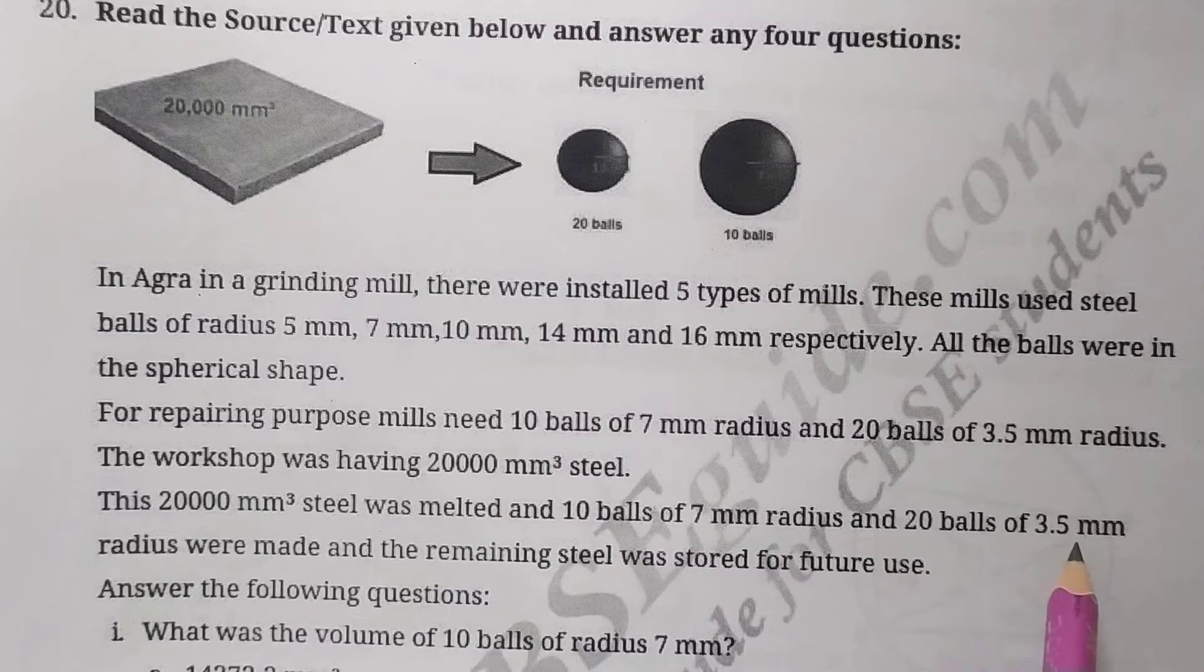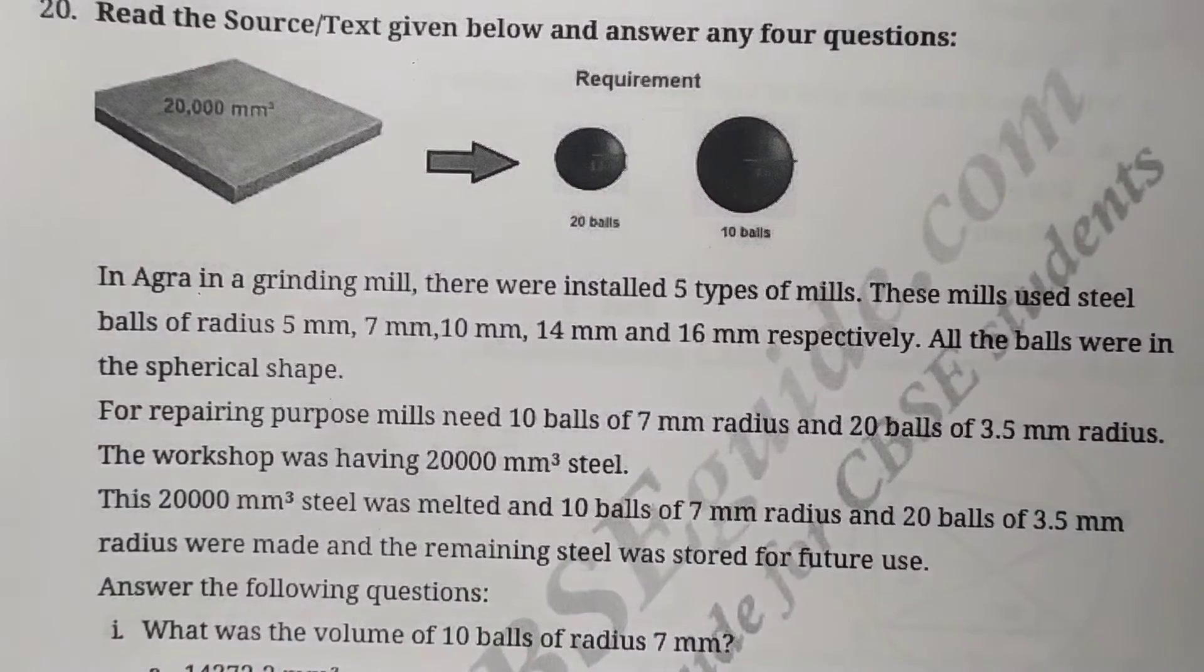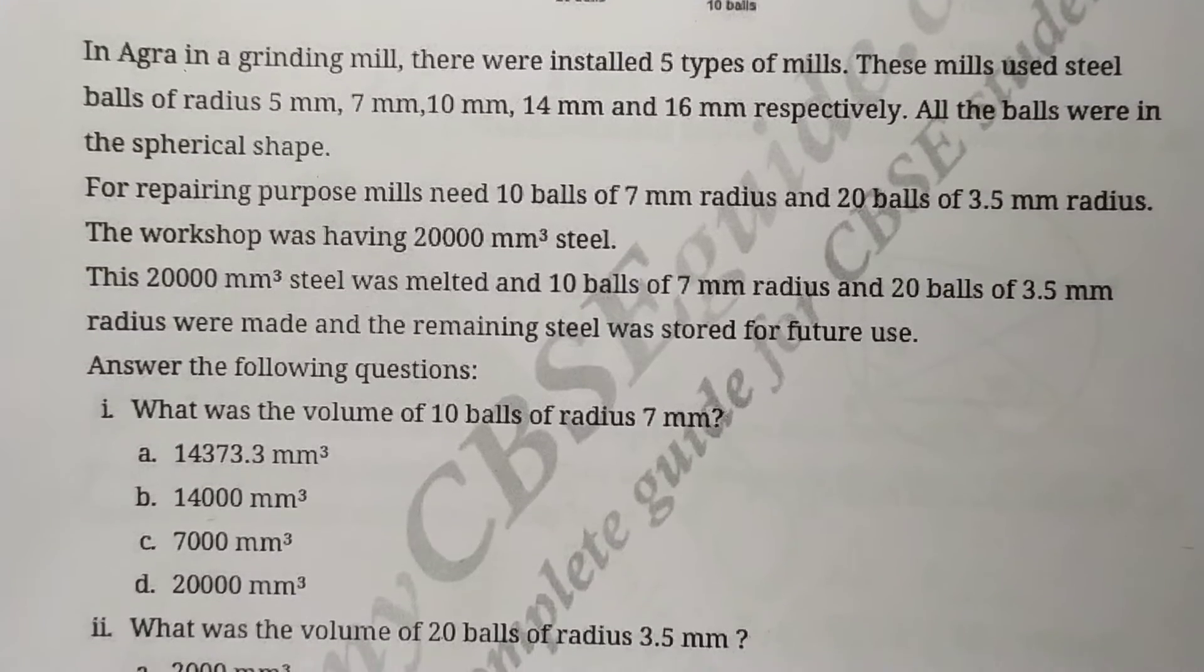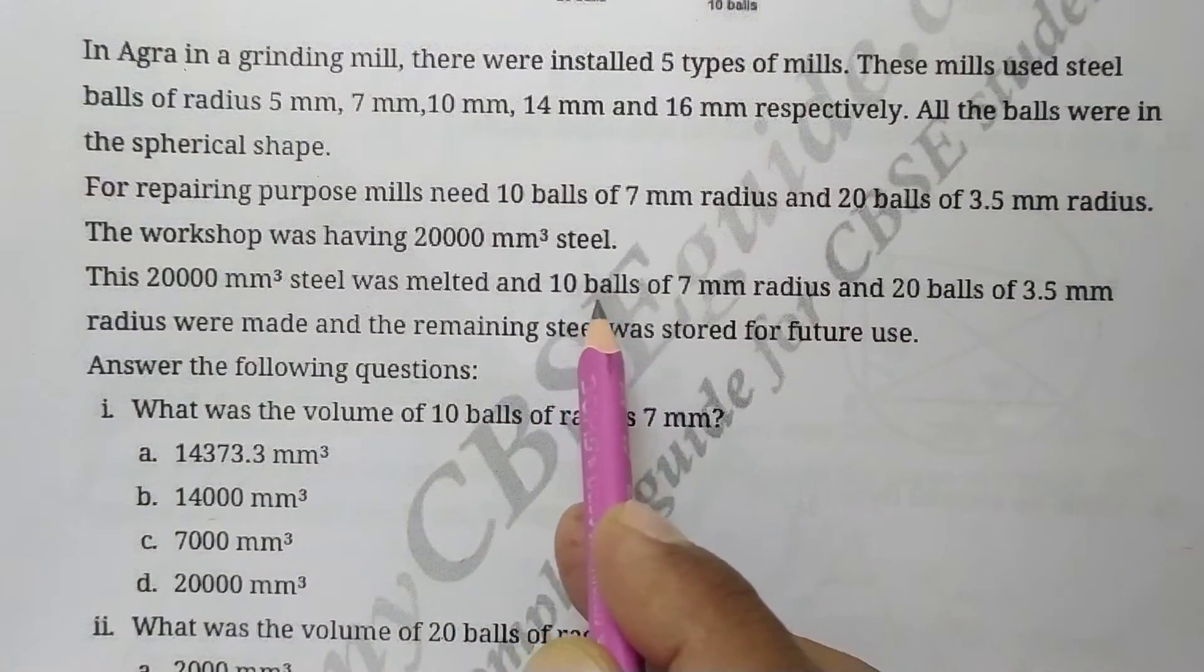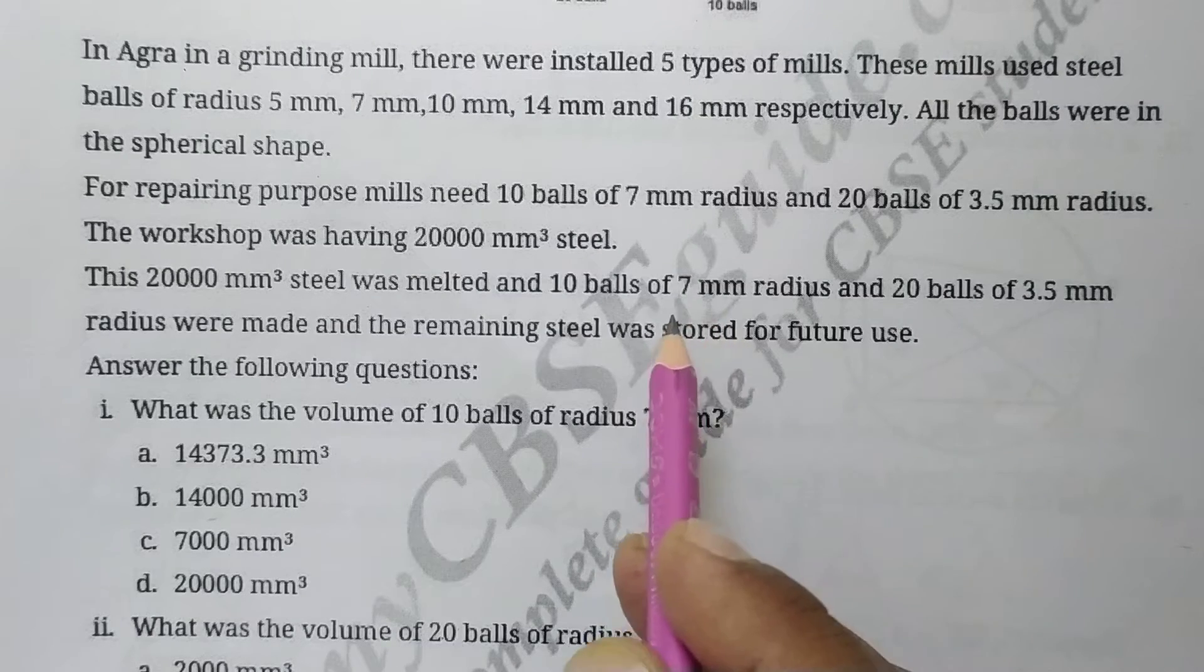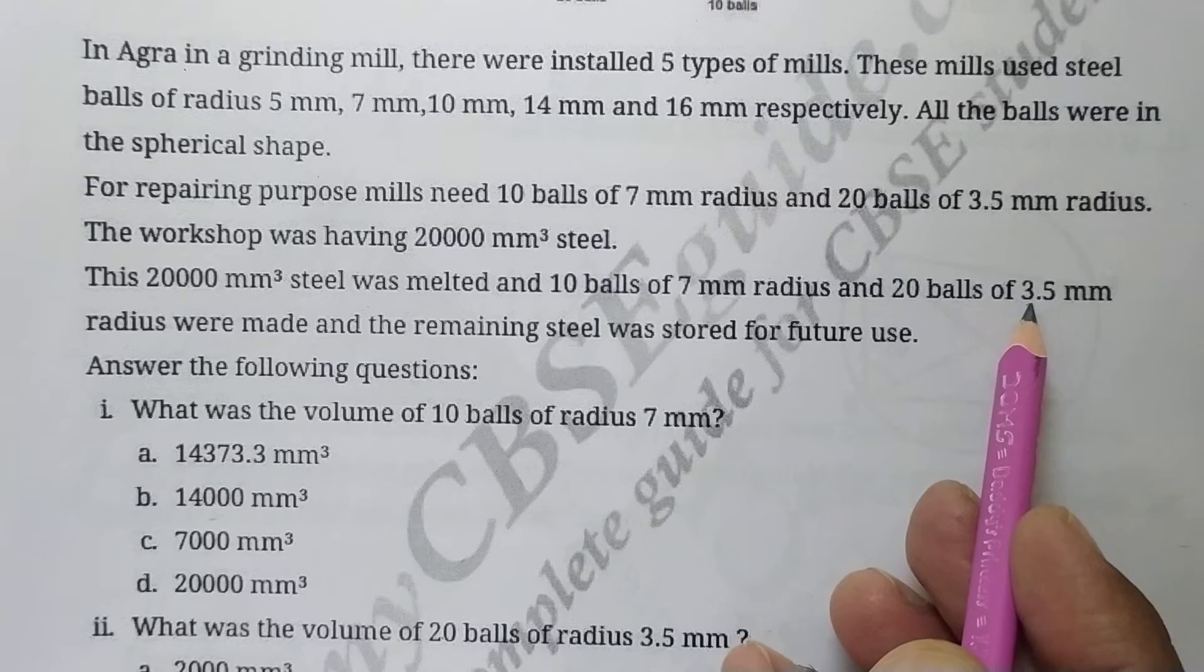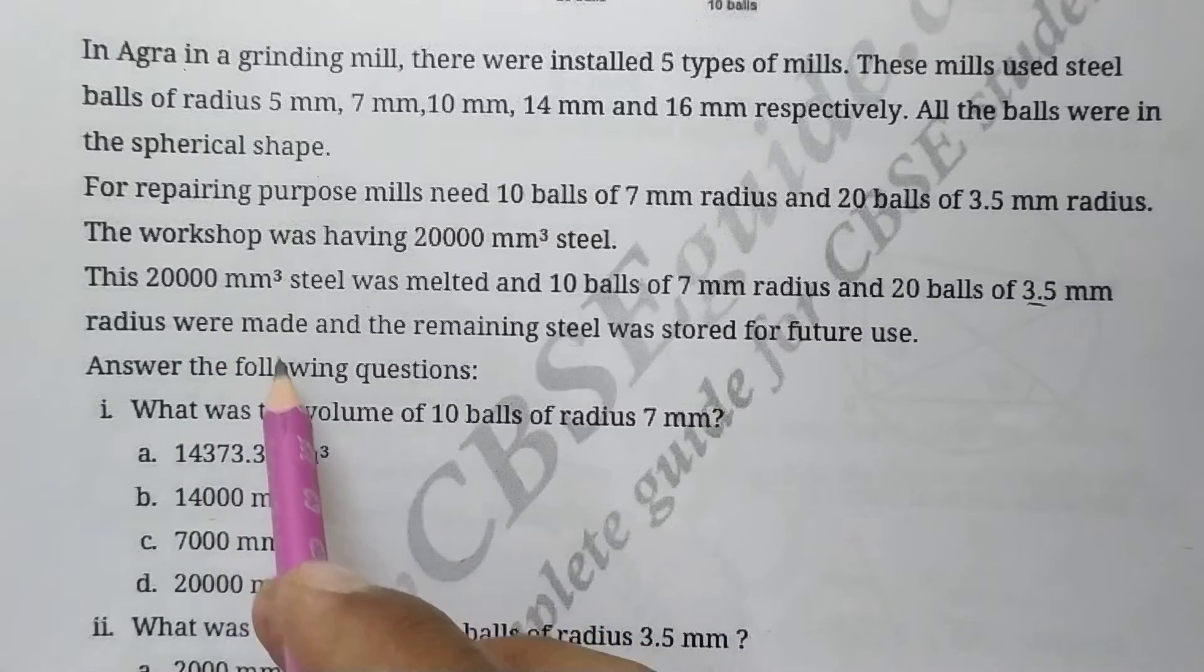This 20,000 millimeter cube steel was melted and 10 balls of 7 mm radius and 20 balls of 3.5 mm radius were made, and remaining steel was stored for future use. Now answer the following questions. So, 20,000 millimeter cube of steel was brought and from it we have to make 10 balls of 7 millimeter radius and 20 balls of 3.5 (that is 7 by 2) millimeter radius, and whatever remains from the 20,000 millimeter cube, we keep for future use.